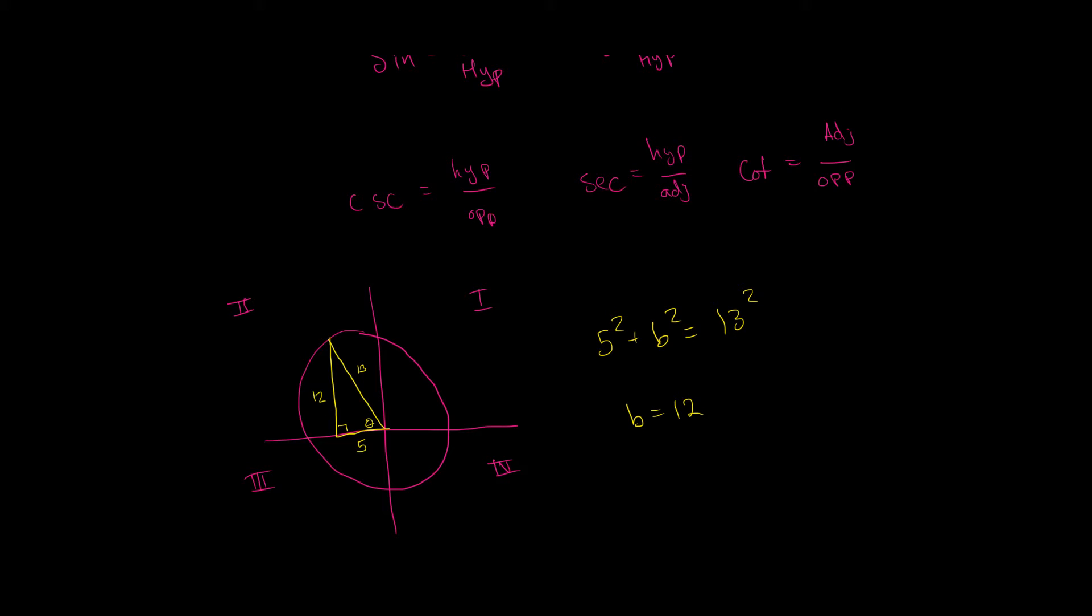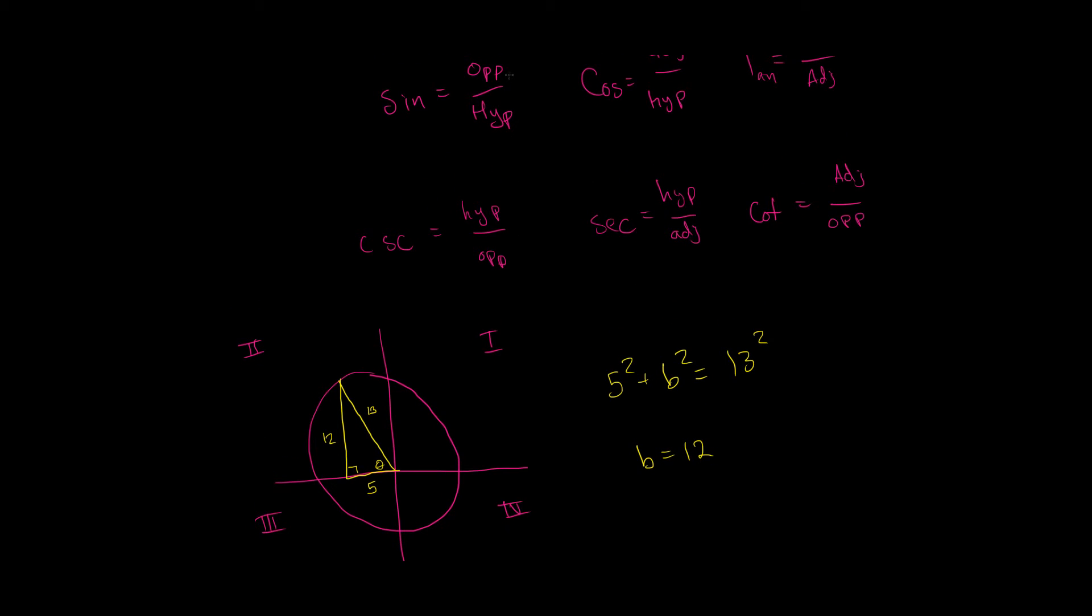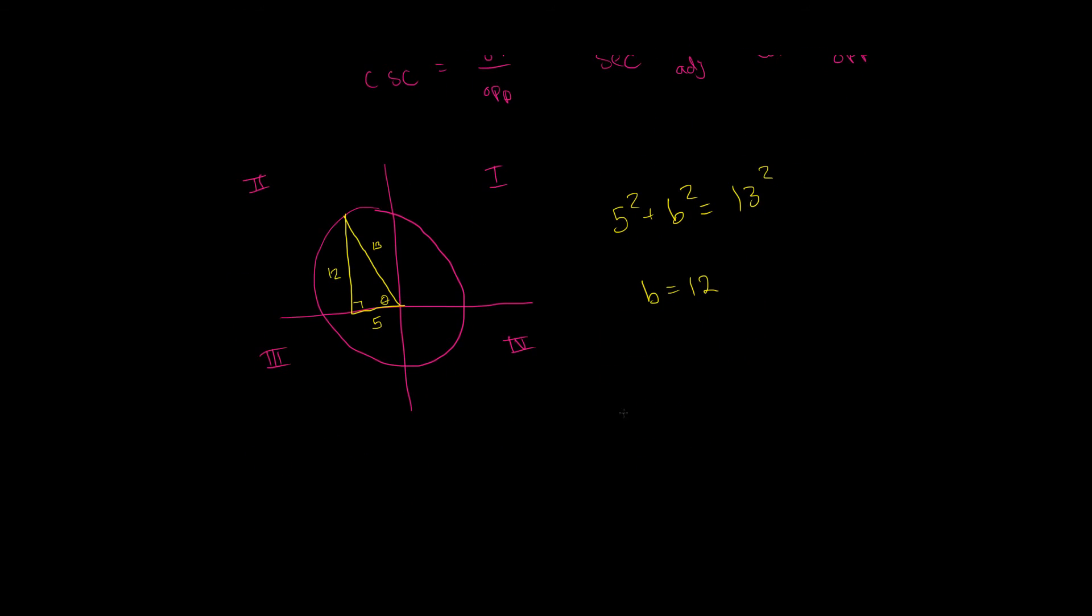Okay. Well, now let's just figure out all of our functions. So, what is sine? Sine is opposite over hypotenuse. So, what's opposite? 12. And what's our hypotenuse? 13. So, sine of theta is equal to 12 over 13.